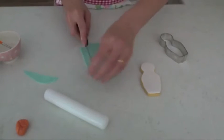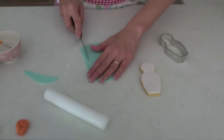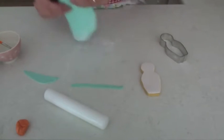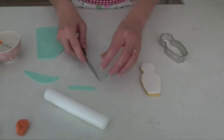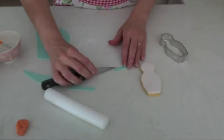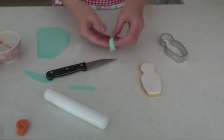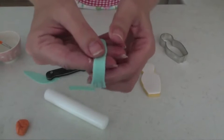To make the scarf, you just cut out a long thin strip. Cut it in half and then just use the sharp knife to cut the fringe. So you just cut little short strips along the end to make a little fringe there.